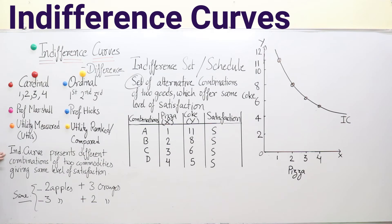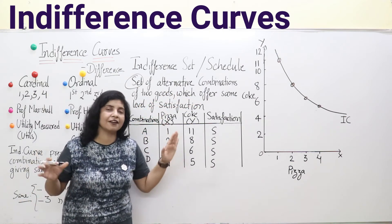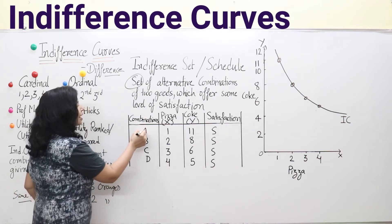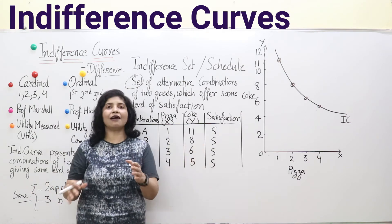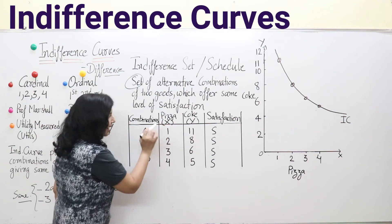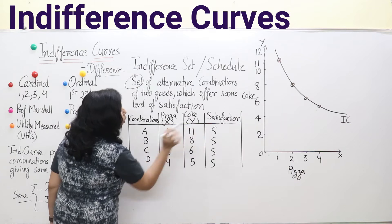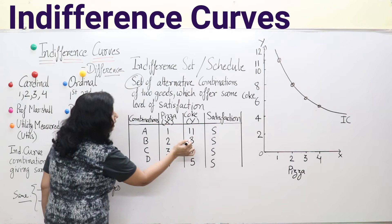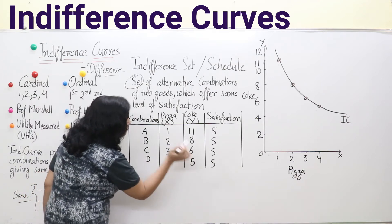In the schedule, we have combinations A, B, C, and D. We've taken pizza as commodity X and coke as commodity Y. In combination A, we take 1 pizza and 11 cokes, giving satisfaction S. In combination B, we take 2 pizzas and 8 cokes. In combination C, 3 pizzas and 6 cokes. In combination D, 4 pizzas and 5 cokes.